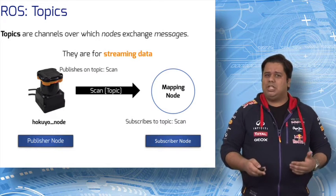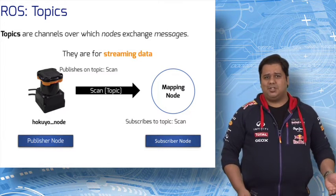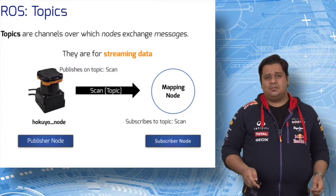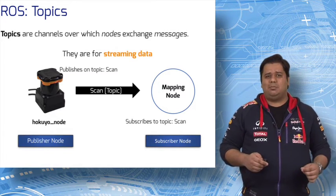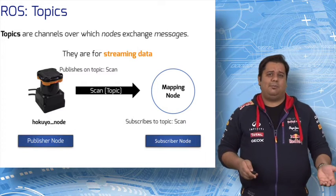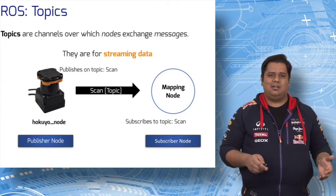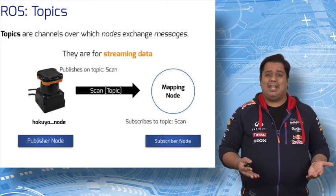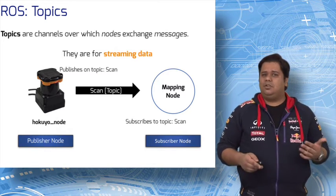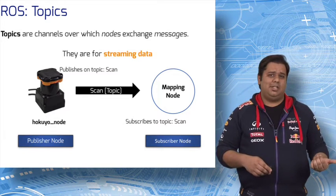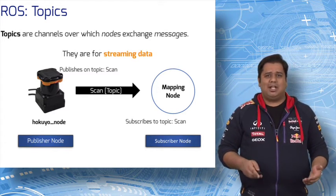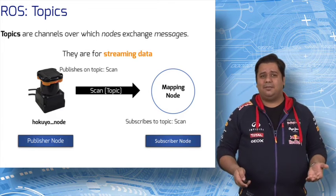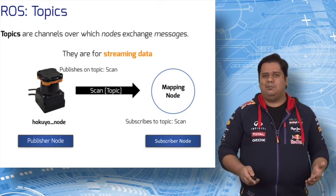Nodes exchange messages with each other using ROS topics and ROS messages. ROS topics are channels over which data or messages are exchanged between nodes. Nodes send and receive messages by publishing or subscribing to the topic. For instance, the lidar on our race car is called the HOKOYU node. This node can publish on a topic called scan, making it a publisher node. Another node in the system, say the mapping node, can subscribe to the scan topic to receive any messages published by the HOKOYU node, and do its planning. So the mapping node in this case becomes the subscriber.